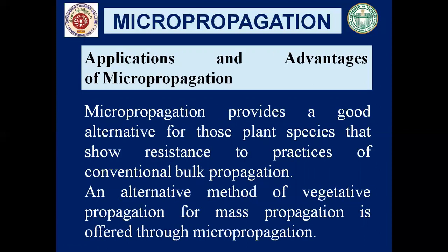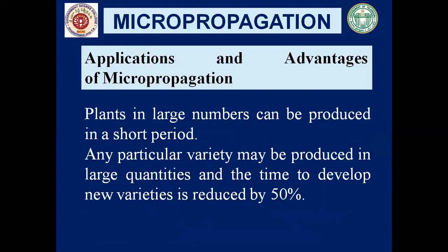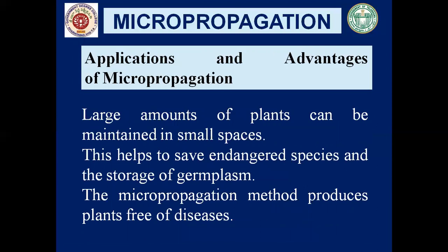Micropropagation provides a good alternative for plant species that show resistance to conventional bulk propagation practices, and it is an alternative method of vegetative propagation for mass production. Plants in large numbers can be produced in a short period. Any particular plant variety may be produced in large quantities, and the time to develop new varieties is reduced by 50 percent — so there is significant time saving.